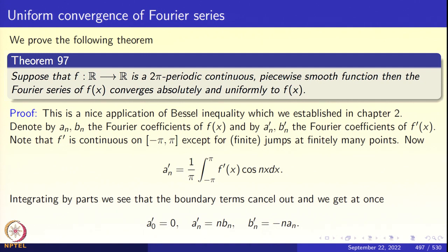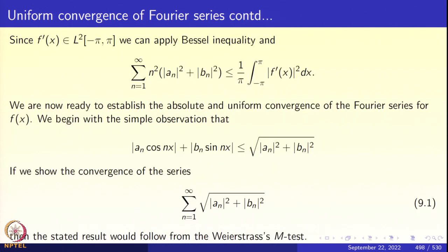The coefficient aₙ' equals (1/π) ∫₋π^π f'(x) cos(nx) dx. Integrating by parts, the boundary terms cancel, and we find: aₙ' = n·bₙ and bₙ' = −n·aₙ. Since f' is in L², we apply Bessel's inequality to the Fourier coefficients of f'. The constant term aₙ'₀ is 0, so: Σₙ₌₁^∞ n²(|aₙ|² + |bₙ|²) ≤ (1/π) ∫₋π^π |f'(x)|² dx. Now we are in a position to establish absolute and uniform convergence of the Fourier series.